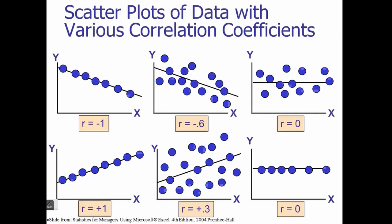Looking at the second graph, the relationship is again negative but the strength of relationship is somewhat less. The line passing through these points is not like the first one where it passes through all the data points — here it does not. In the third graph, the linear correlation is 0, meaning there is no correlation between x and y. If you change x, there is no change in y.